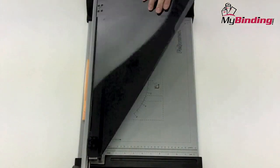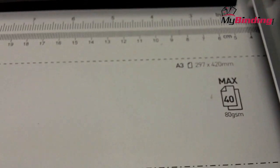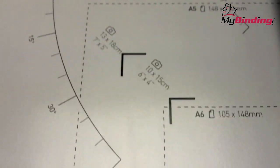Simply lift up the paper shield and you're ready to go. Use the precise and plentiful measurements on the face of the table to align your papers.